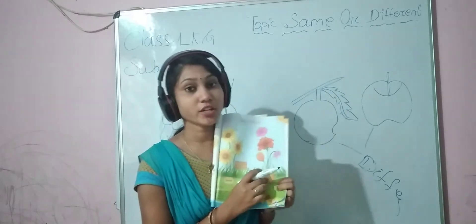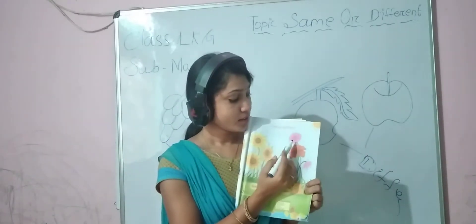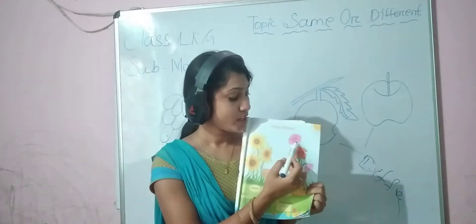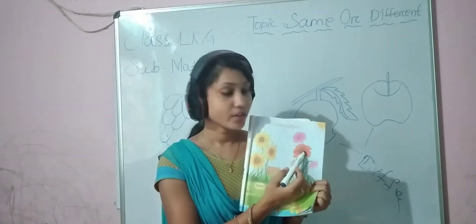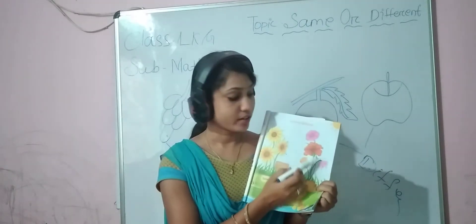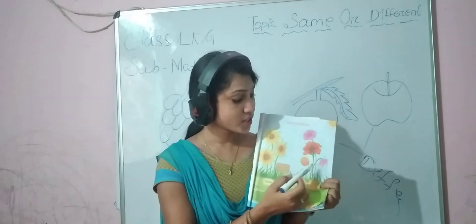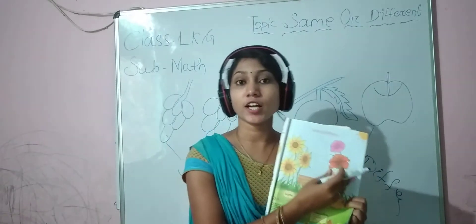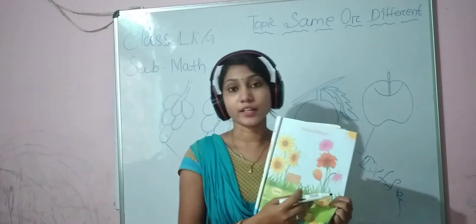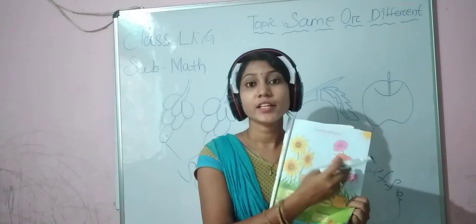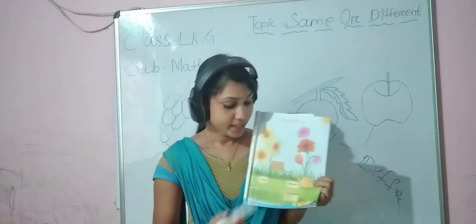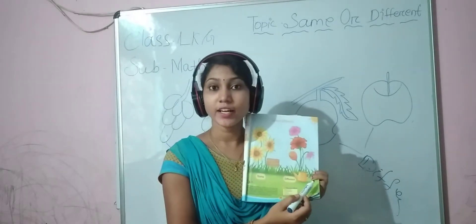Next, look at this flower. This flower is pink color, red color, orange color. You can see this one is green color. What do you say here? Different. This is a different color. These are different.